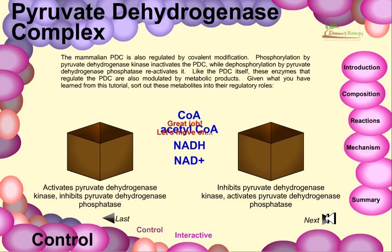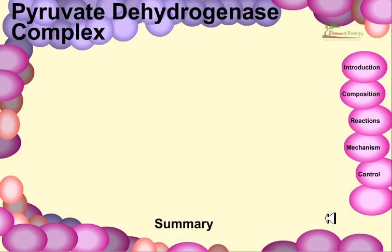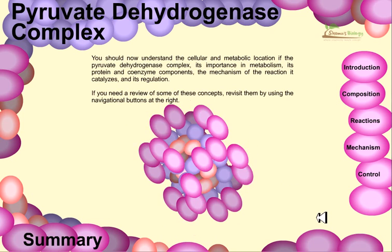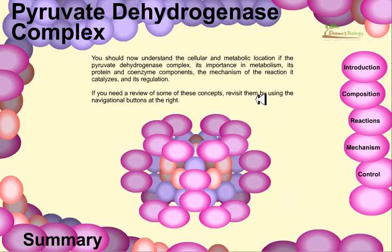In summary, we have discussed a very complicated step. We should understand the cellular metabolic location of the pyruvate dehydrogenase complex, its importance in metabolism, its protein and coenzyme components, the mechanism of the reactions it catalyzes, and its regulation. This is a really complicated step, so if you don't understand, go back and review it again and again. I hope this video will help you understand it.